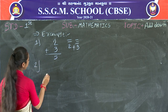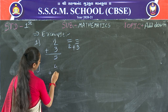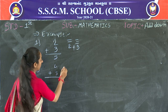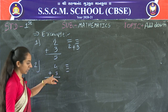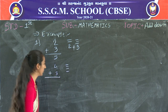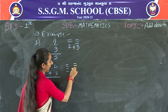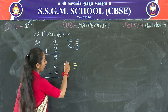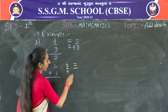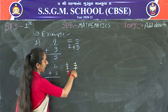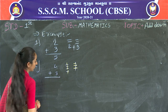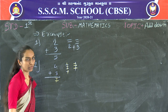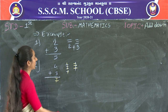Next one is 4 plus 3. First you draw 4 lines: 1, 2, 3, 4. Then draw 3 more lines: 1, 2, 3. Now count all the lines: 1, 2, 3, 4, 5, 6, 7. Write down the number 7. 4 plus 3 is equal to 7.